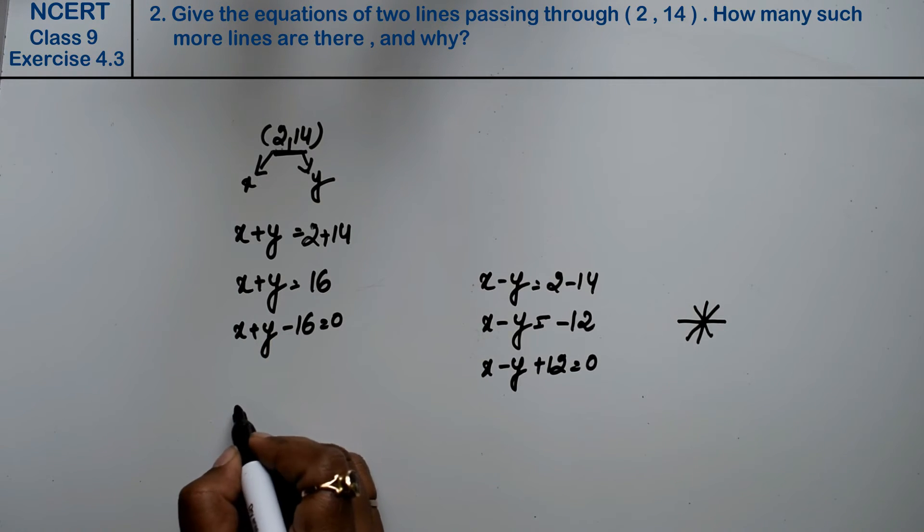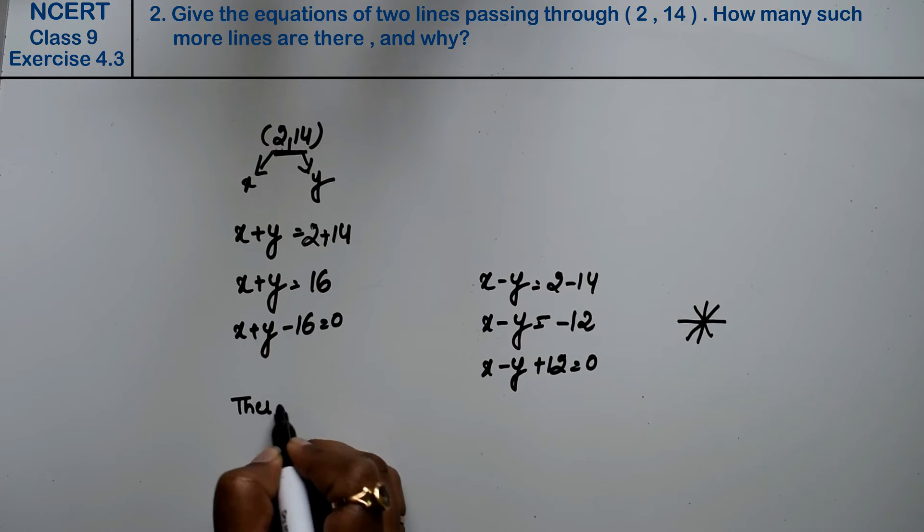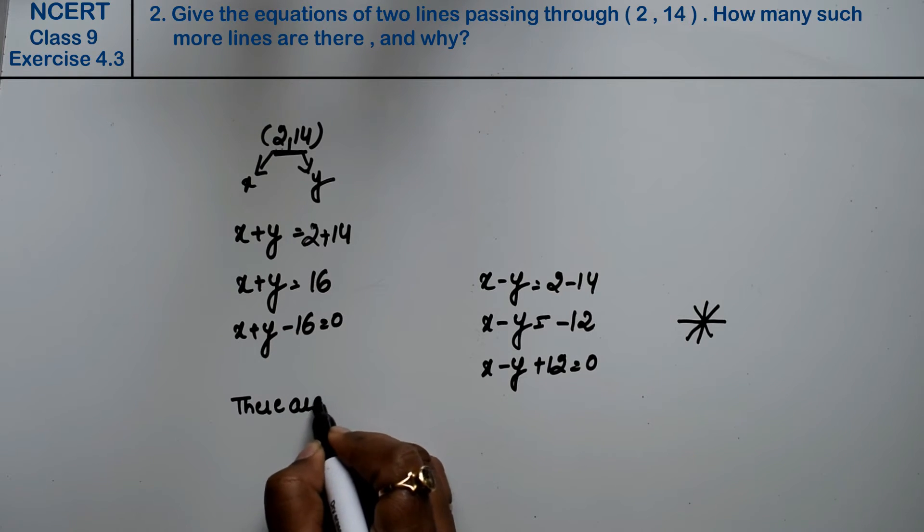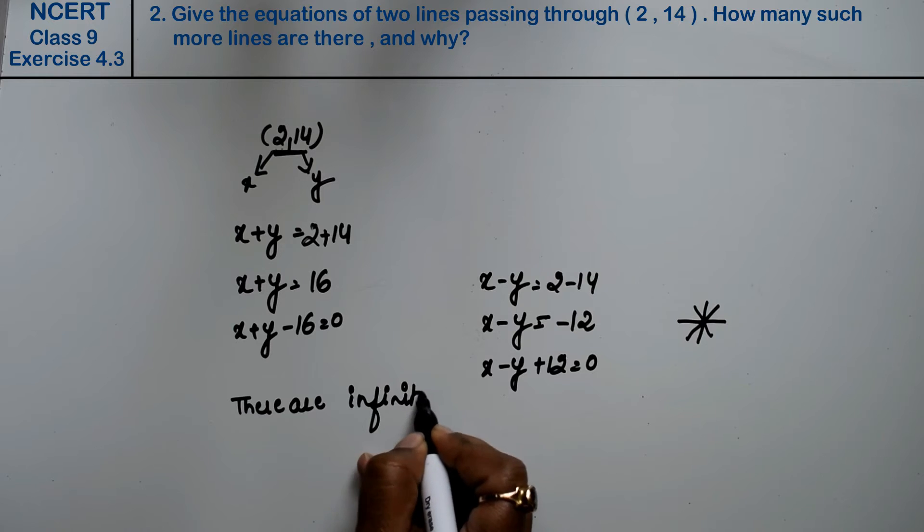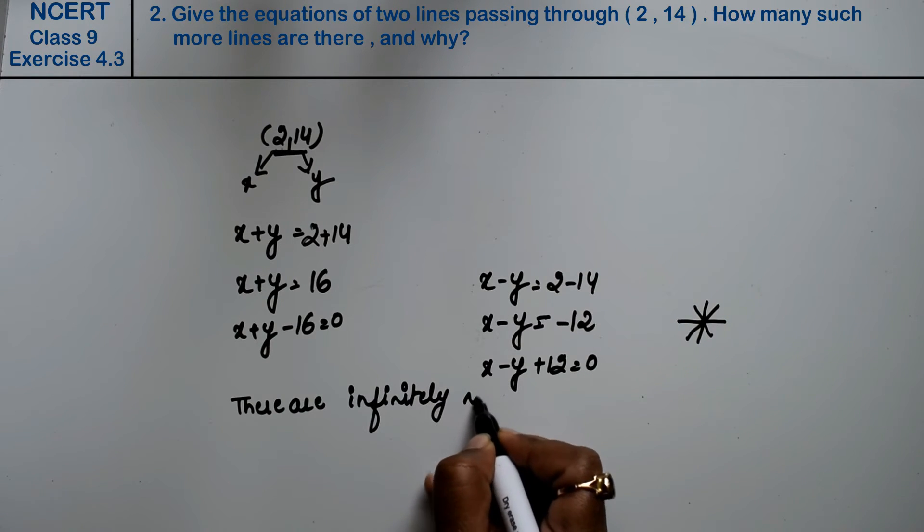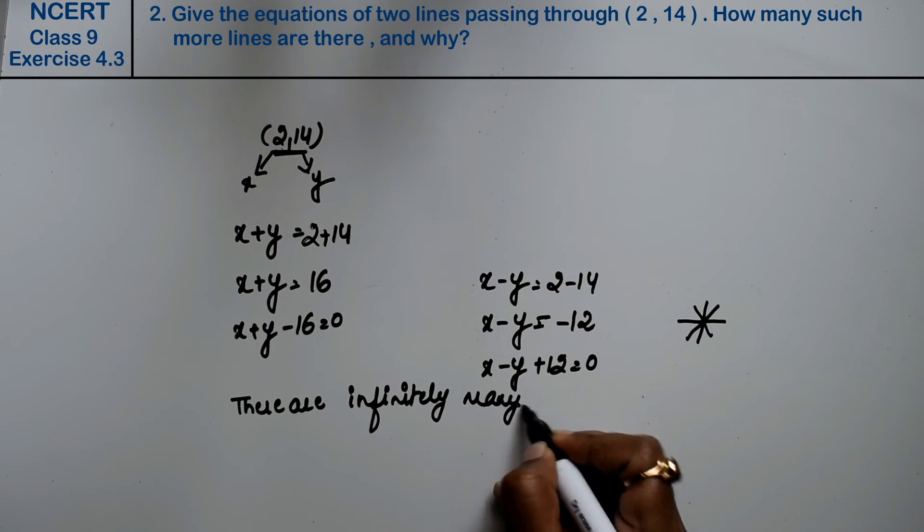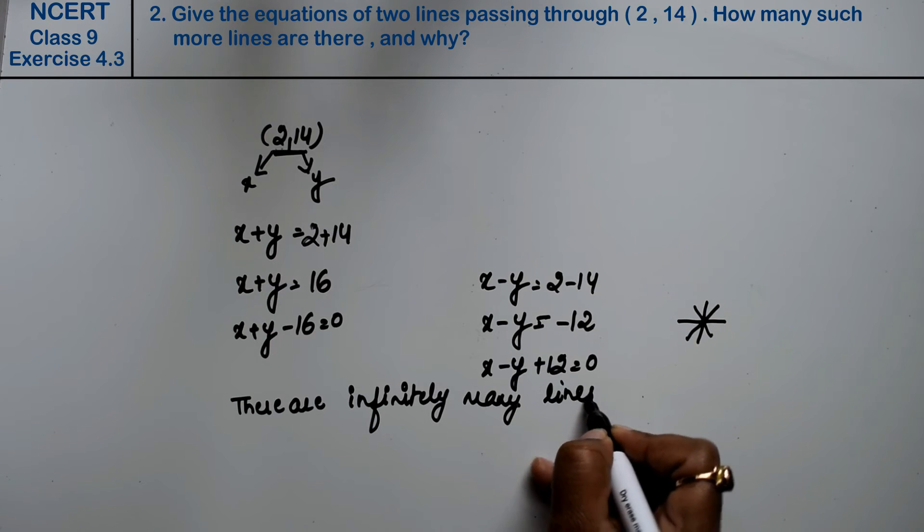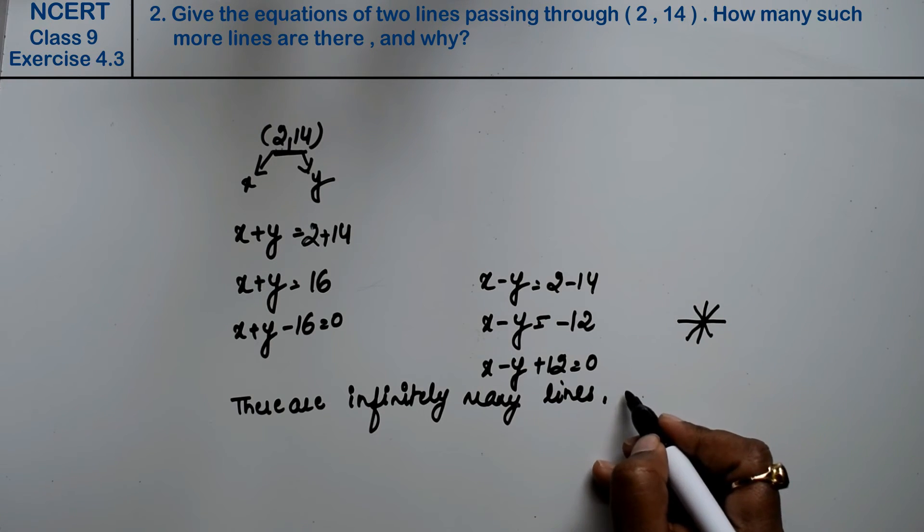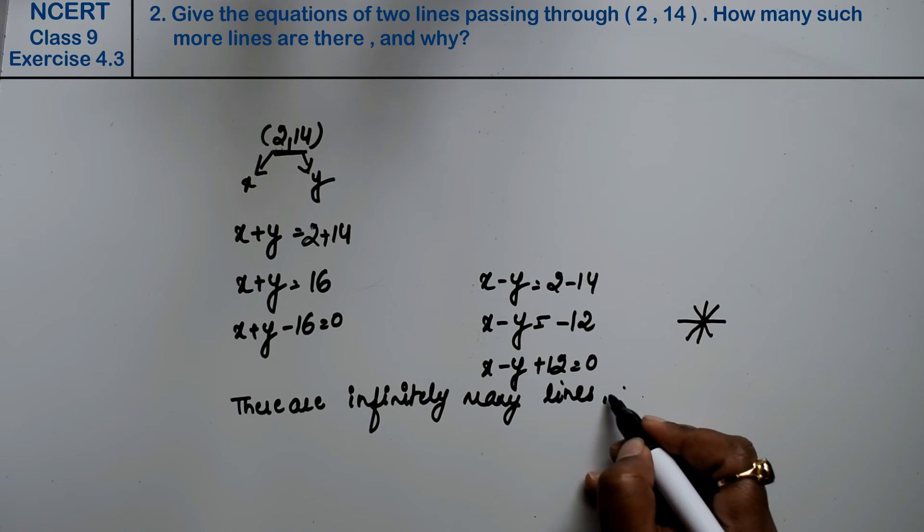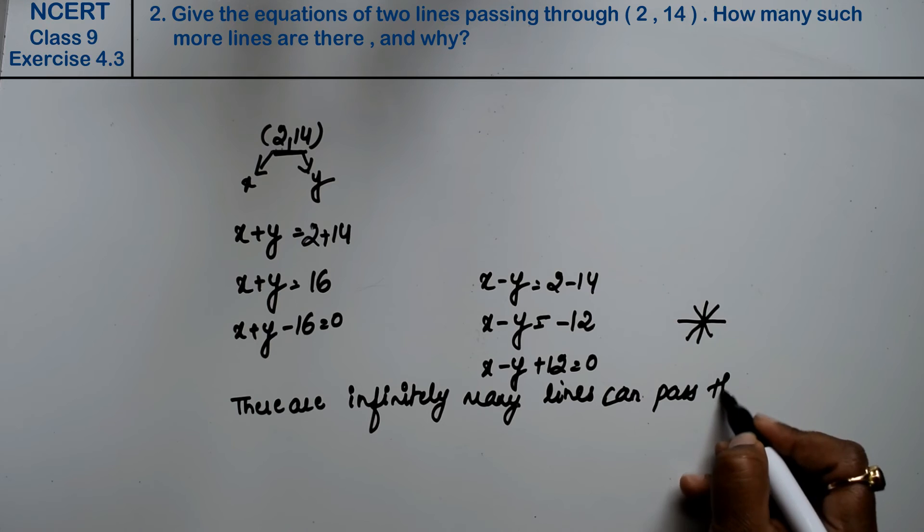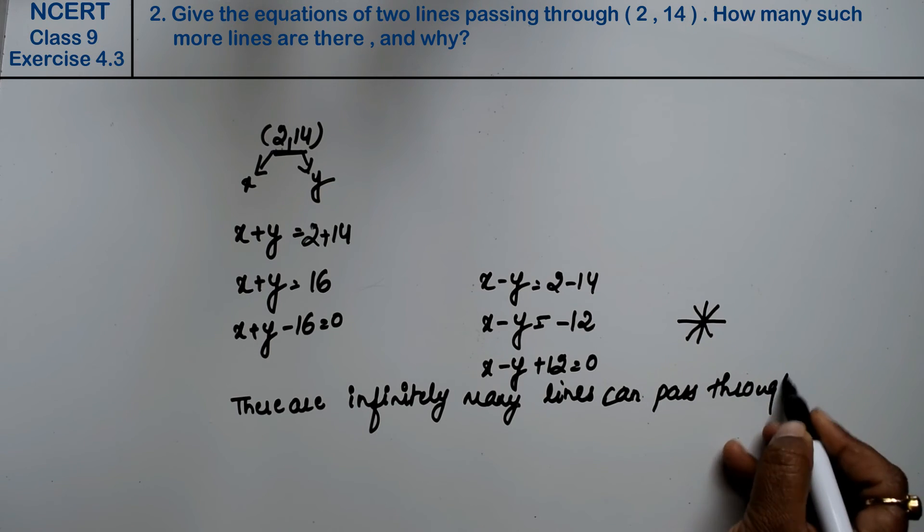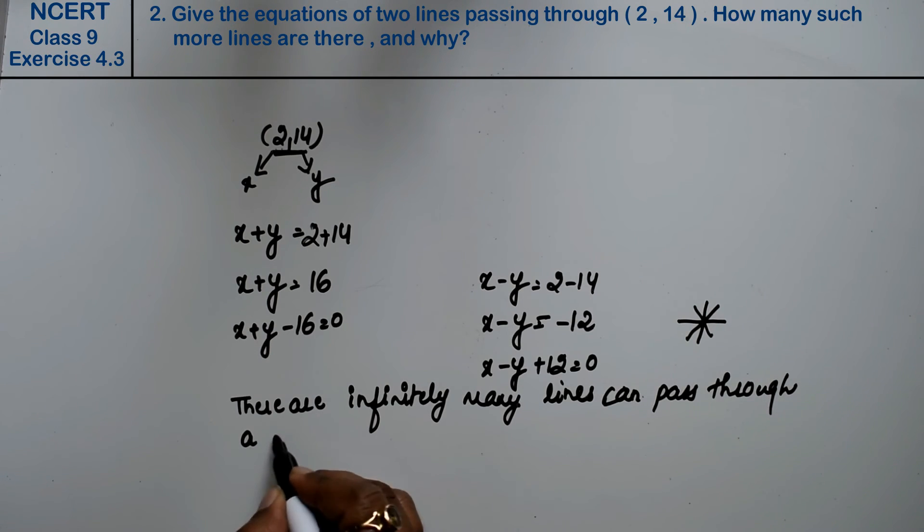So what will be the answer? There are infinitely many lines can pass through a point.